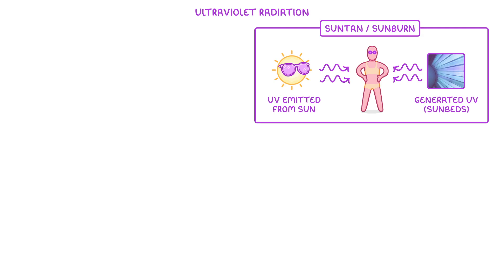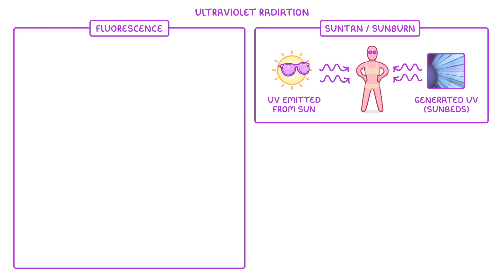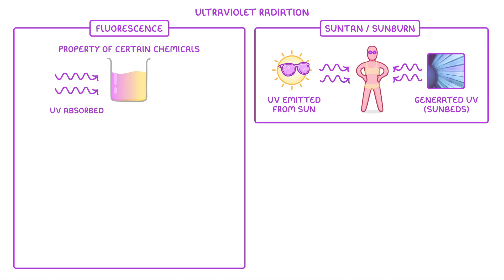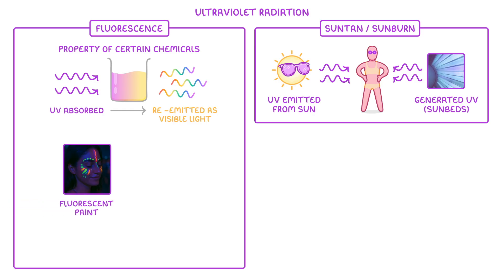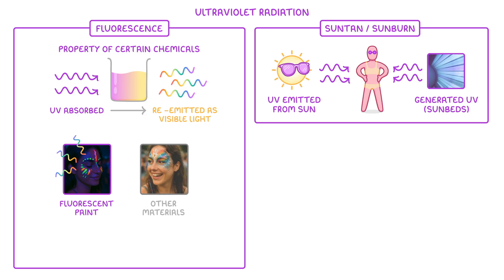One of the more tricky concepts in this topic is the idea of fluorescence. This is a property of certain chemicals where ultraviolet light is absorbed and then the energy is re-emitted as visible light. This is why fluorescent paints look so bright — they're actually emitting light, unlike most other materials which only reflect it.